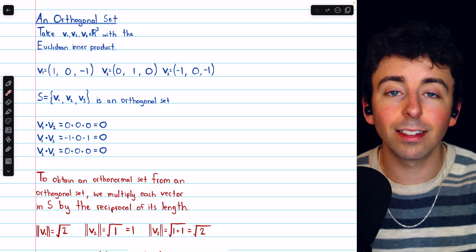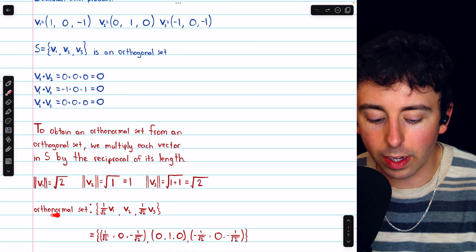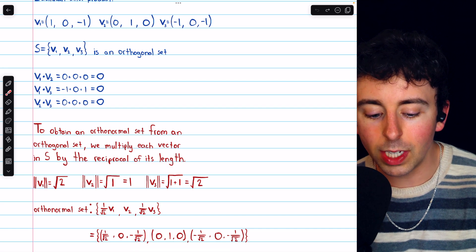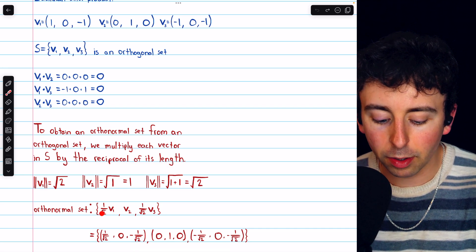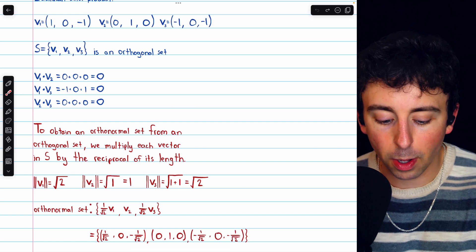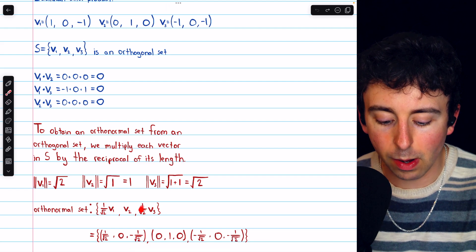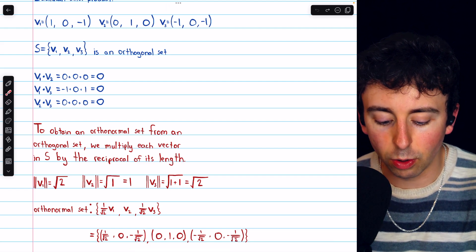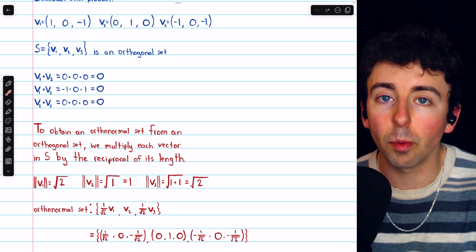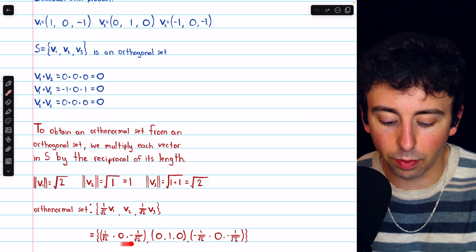Now that we have all of these lengths, we can normalize the vectors by scaling them down to a length of 1. And so here is our orthonormal set. We take those three vectors from S and then multiply each one by the reciprocal of its length. V1 gets multiplied by 1 over root 2, V3 gets multiplied by 1 over root 2, and V2 does not have to change because it's already a unit vector. Actually doing the computations, we see those vectors here.